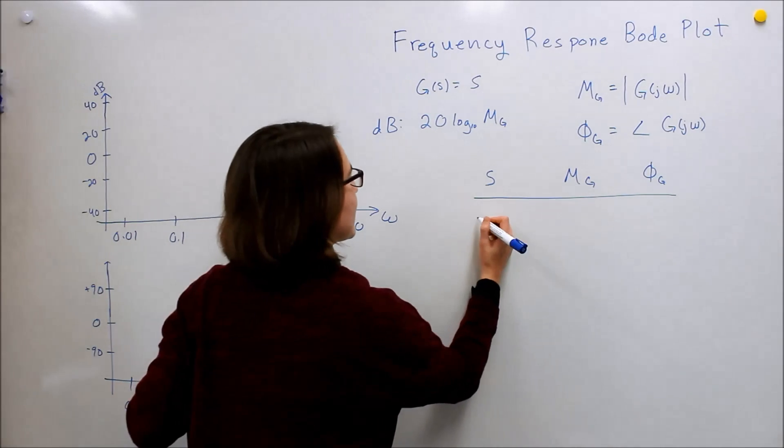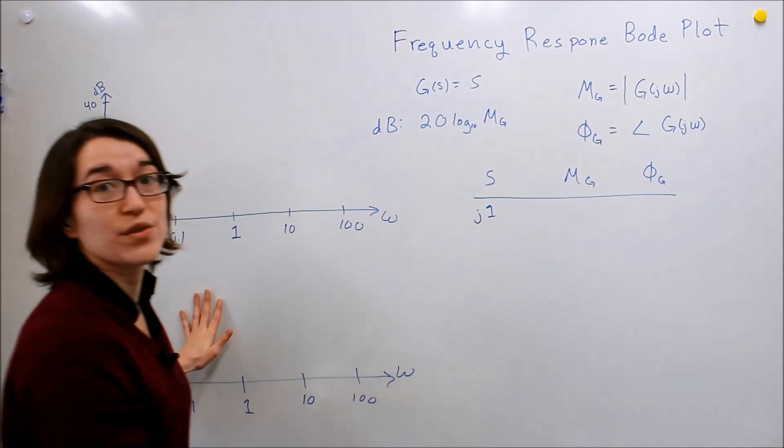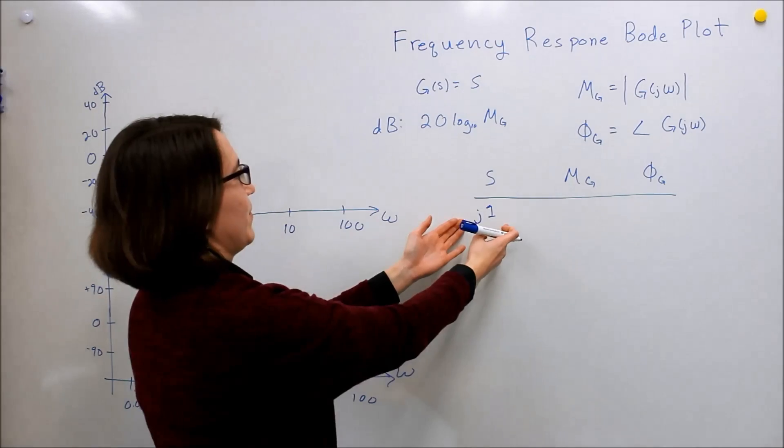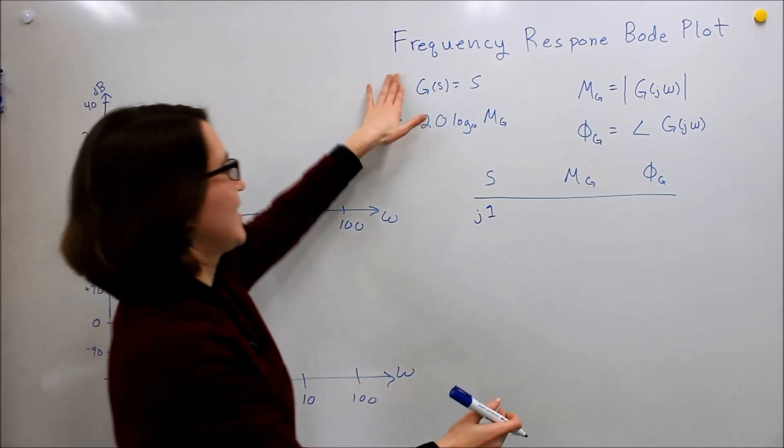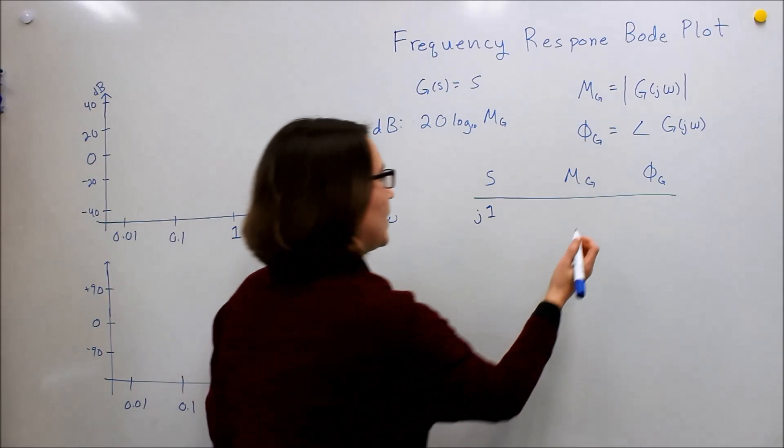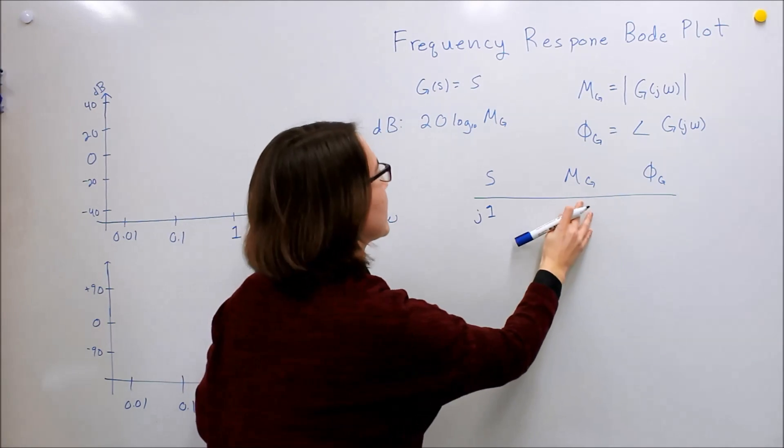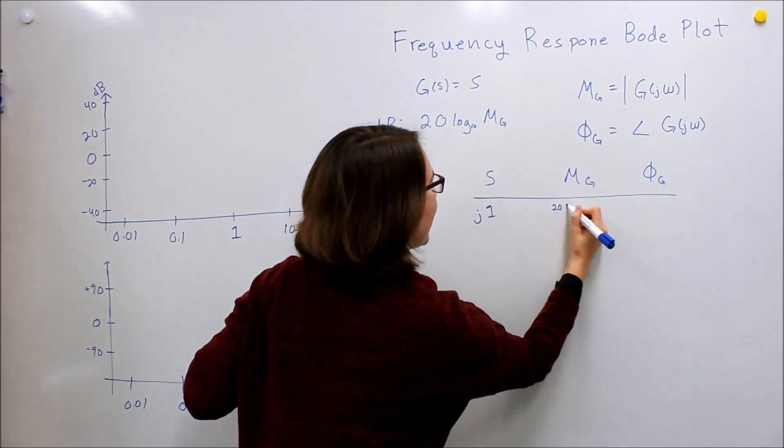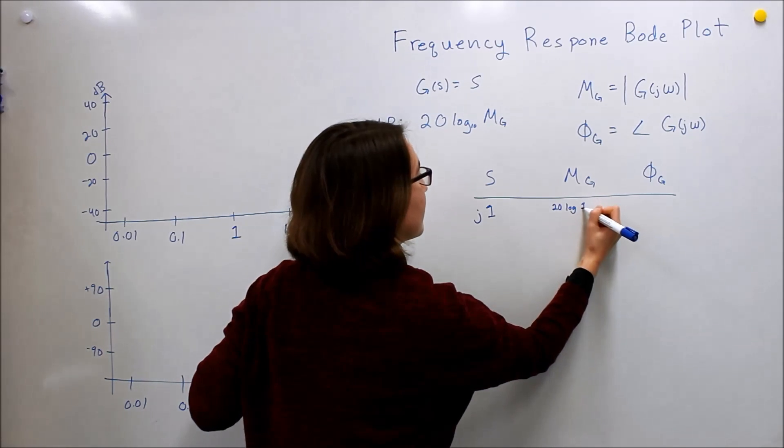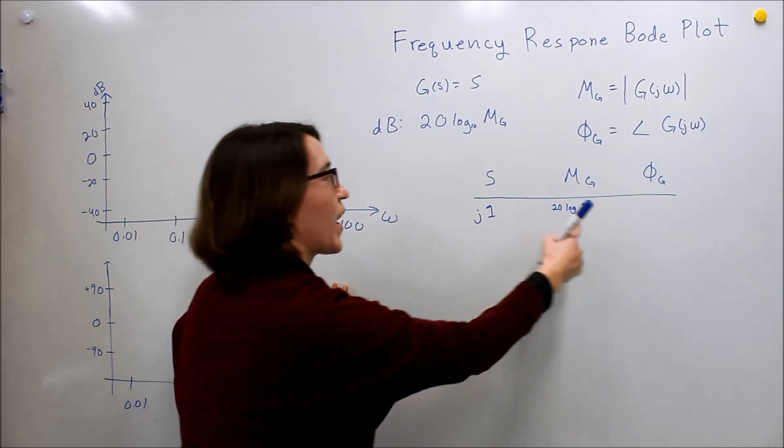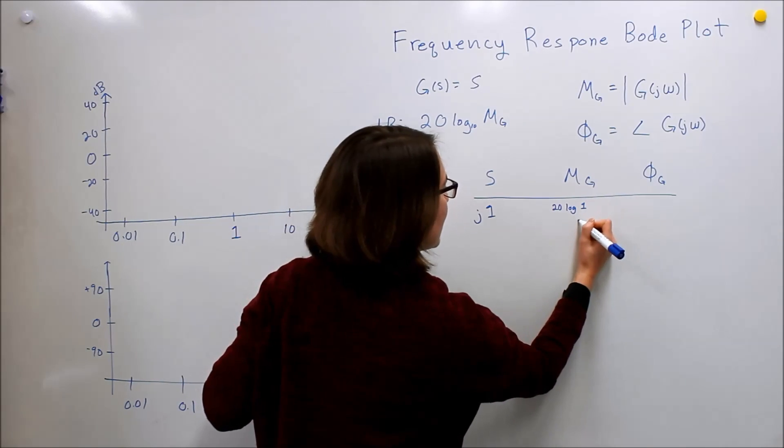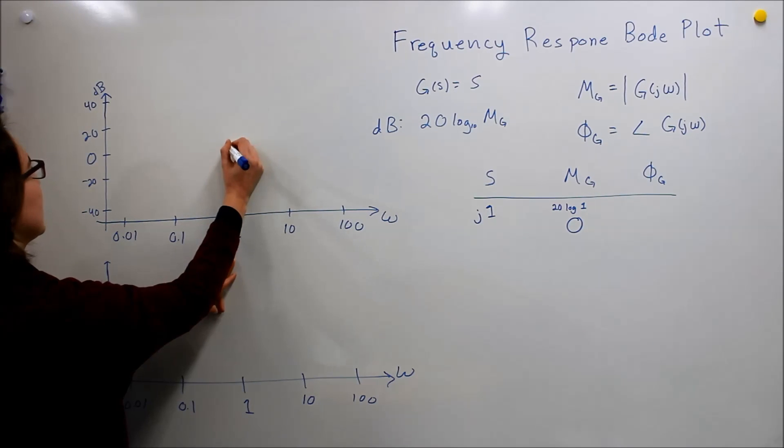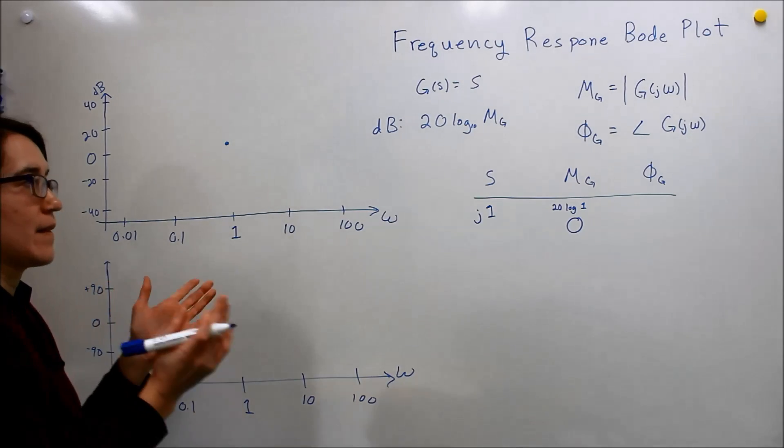Let's look at S equals j1, so omega equals 1. If we take the magnitude, luckily our transfer function is very easy - it's just S. So the magnitude is simply 1. When we put that into our formula, it's 20 log of 1, but log of 1 is 0, so we get 0. At point 1, we get a dB magnitude of 0.